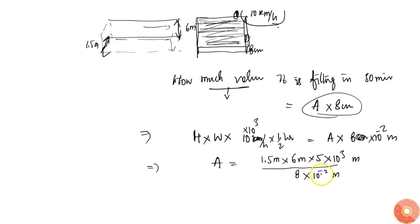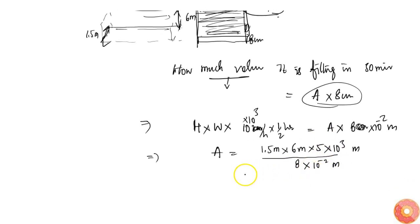So this will become equal to 1.5 into 6 is 9, 9 into 5 into 10 power 5. If this thing goes upside by 8, so that is 1.125, 1.125 into 5 will be 5.625.